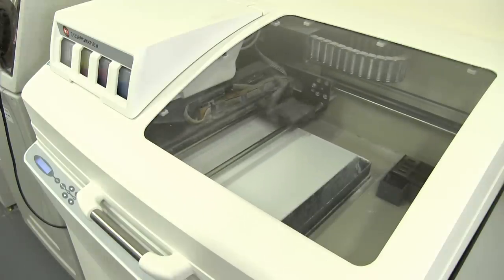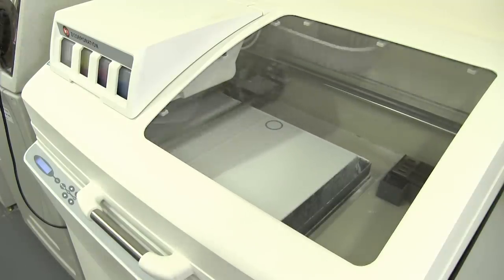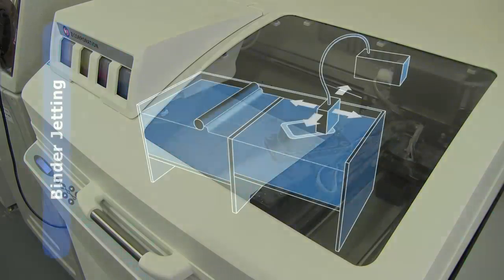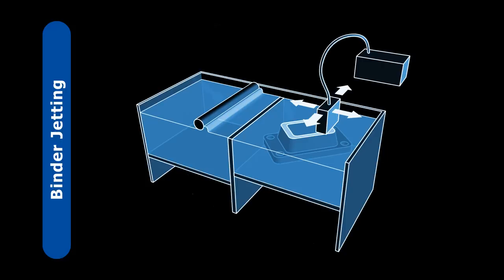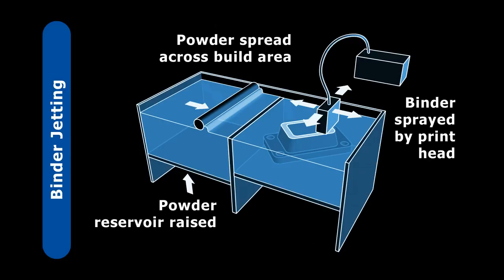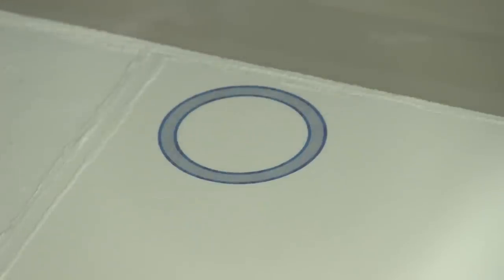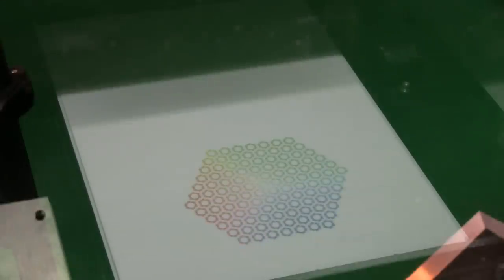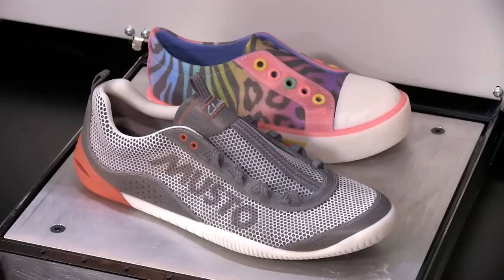Moving on we come to technologies that build objects from powders. The first of these is binder jetting, which sprays a binder or glue onto successive powder layers. The process typically involves a powder reservoir being raised with a thin layer of powder spread across the build area by a roller or blade. A print head then sprays on a binder where required and the process repeats. Most commonly binder jetting builds objects from a gypsum powder that is sprayed with a glue and sometimes coloured inks to produce lower cost and usually rather fragile colour objects. Industry leader 3D Systems also sold colour jet printing binder jetting hardware that could create full colour plastic objects such as these very impressive prototypes.